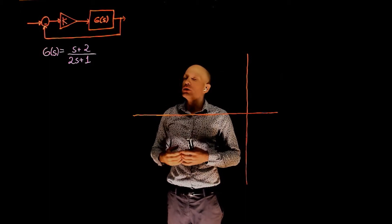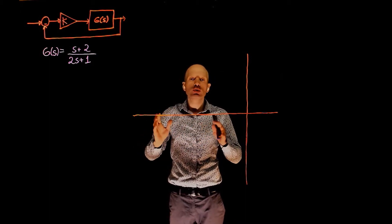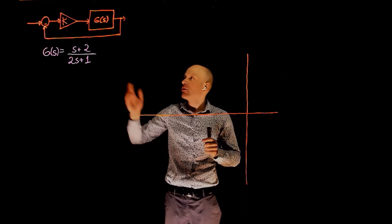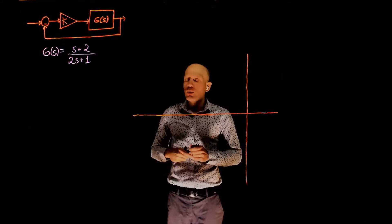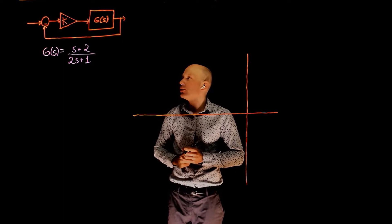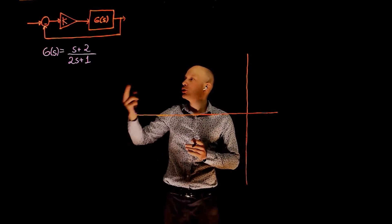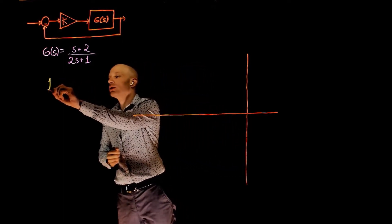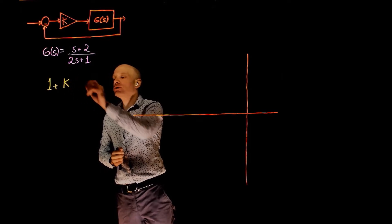We are looking at the location of the closed-loop poles for that range of k. We know that if this function is used in a unit feedback loop, the characteristic equation of the closed-loop system is 1 plus k times g of s.